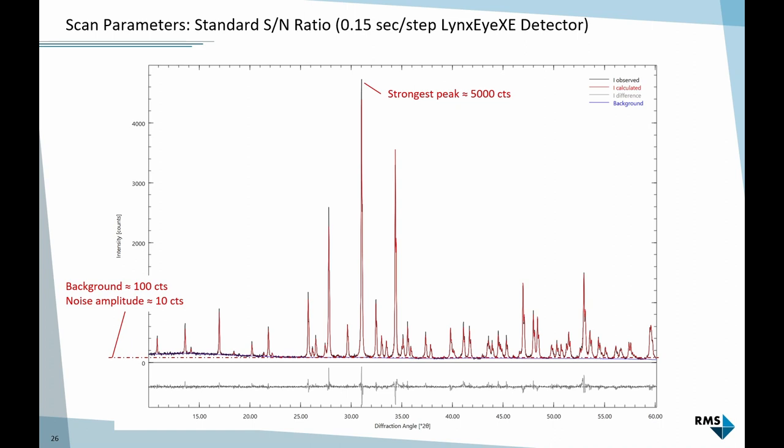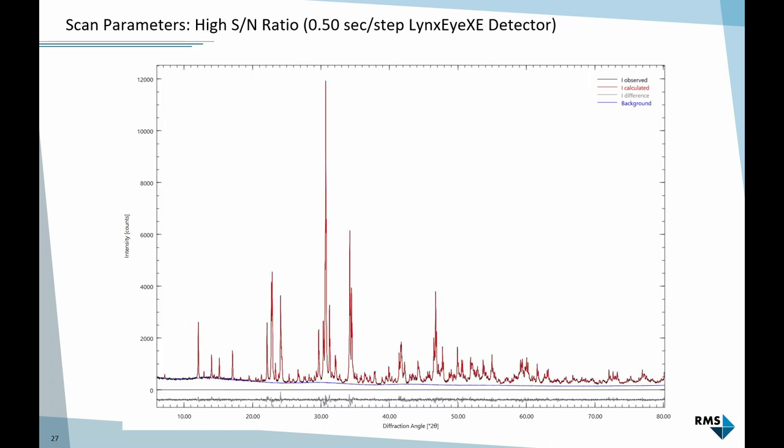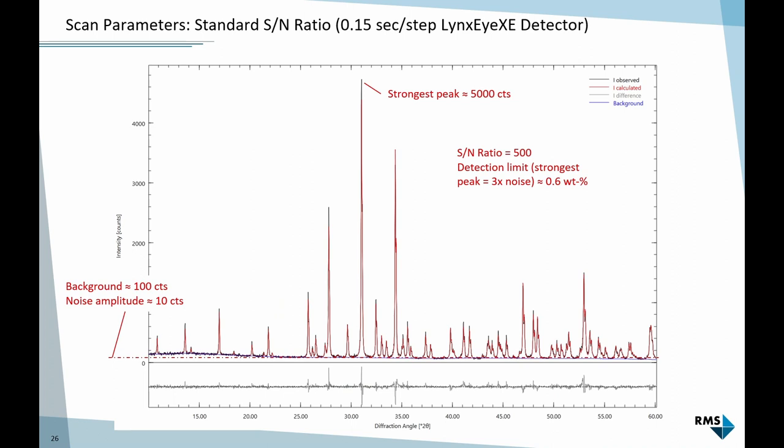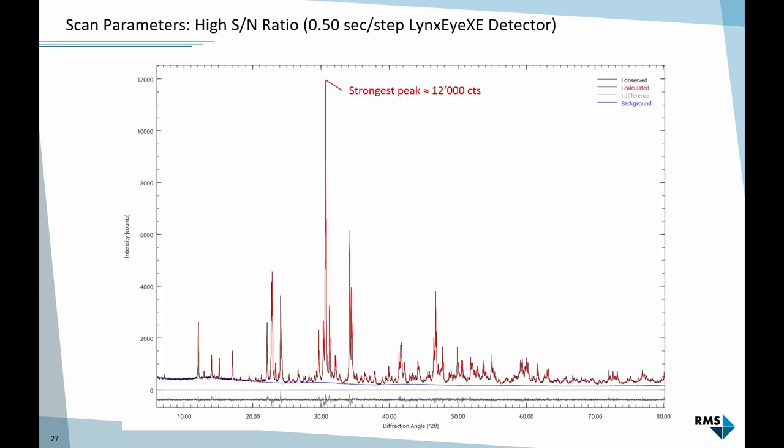Here's another example around 5,000 counts. It gives me reasonably low noise pattern - the strongest peak 5,000, background around 100 counts. That means the noise amplitude is the square root of 100, which is 10 counts. From this I can estimate a signal-to-noise ratio of 500, which translates to a detection limit of a bit less than 1% for this strongest phase. For ceramics with relatively complex diffraction patterns, that's quite okay. This was measured with 0.15 seconds per step. If I increase counting time to 0.5 seconds per step on the same instrument, I get about 12,000 counts on the strongest peak. My background is about twice the intensity, noise amplitude 15 counts. That would reduce my detection limit to about 0.4 weight percent, even though it's more than twice the counting time.